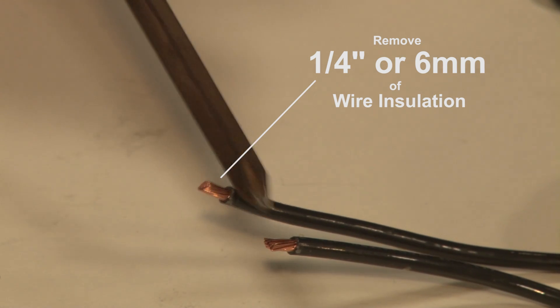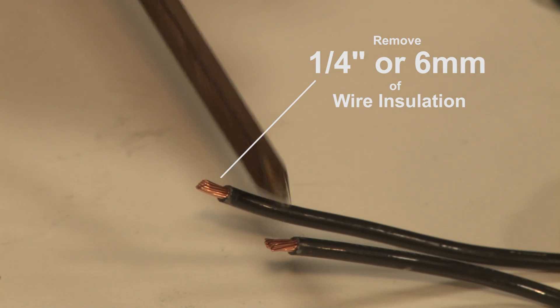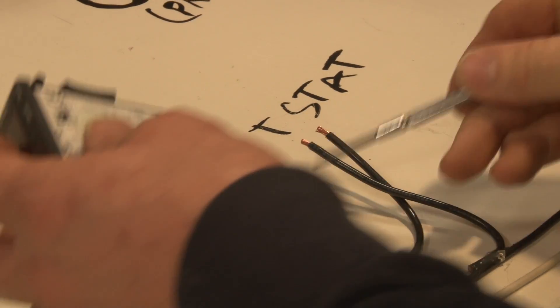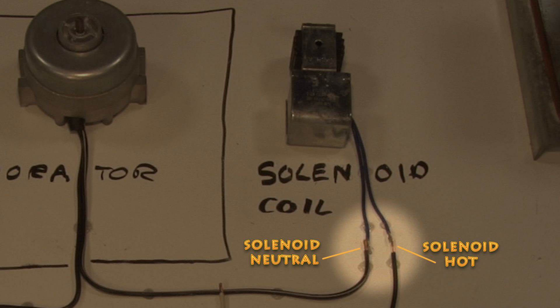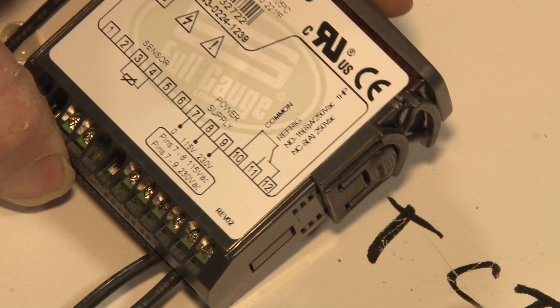And we want to have about a quarter inch or six millimeters of wire exposed to go into the controller. These two wires are left from our thermostat. One of them is our hot coming from 115 volts. The other goes to our solenoid. Here's one more look at those connections.